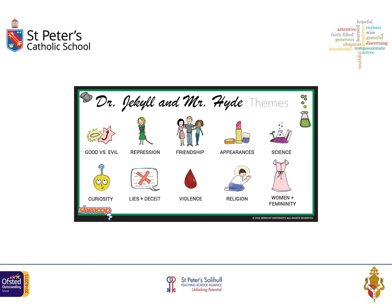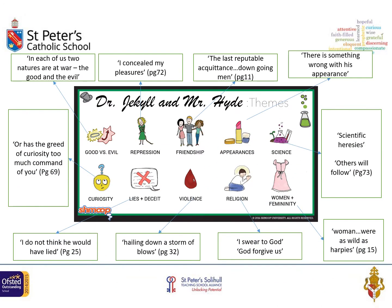The themes of this novel are numerous, but here are some of the more prevalent ones. I'm going to show some quotations to consider for your revision — these aren't the only quotations that link to them. I'd suggest you pause the video and think about what individual words mean and suggest. For example: 'I concealed my pleasure' — the idea that he's keeping something private, a sense of repression. For violence: 'hailed down a storm of blows' — think about the word 'hailing,' associated with cold, harsh weather.